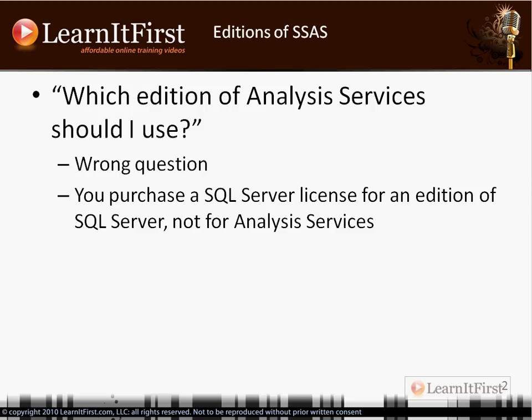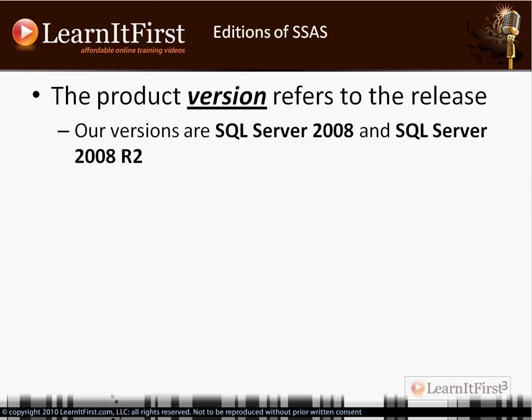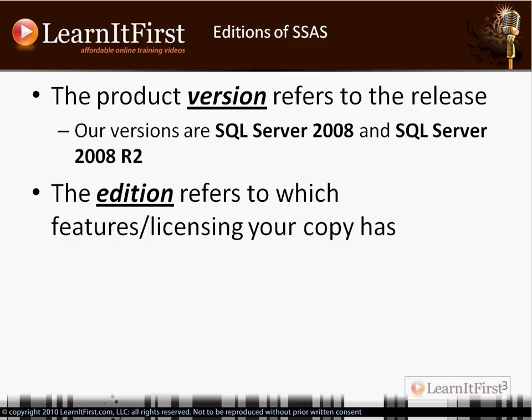There are two distinct terms: version and edition, and it's important to understand the difference. Version refers to the release — in this course we're dealing with SQL Server 2008 and SQL Server 2008 R2. Edition refers to the feature set a given copy supports — for example, Enterprise Edition or Standard Edition.